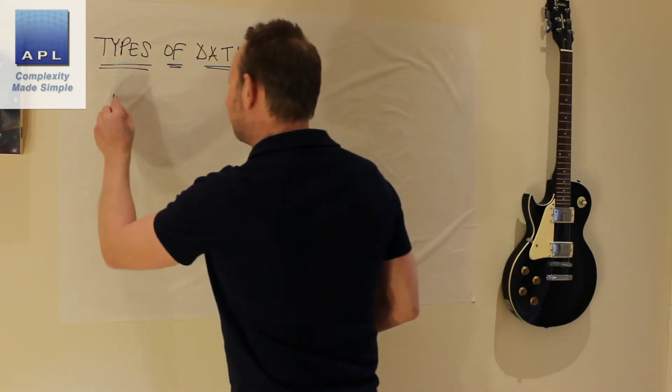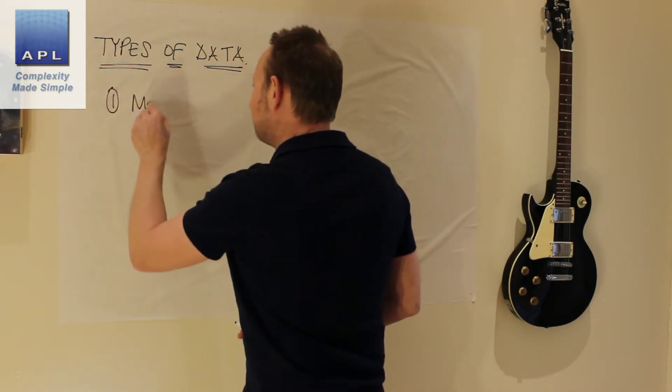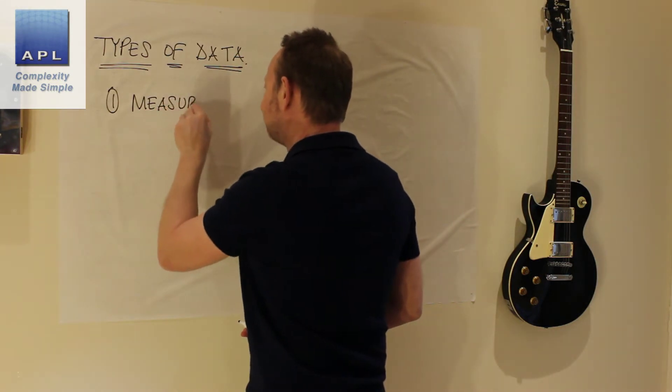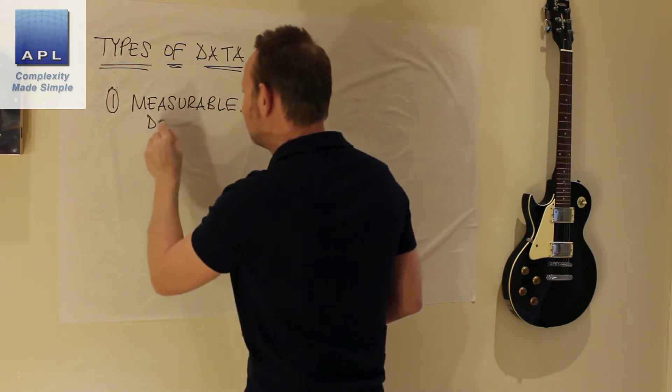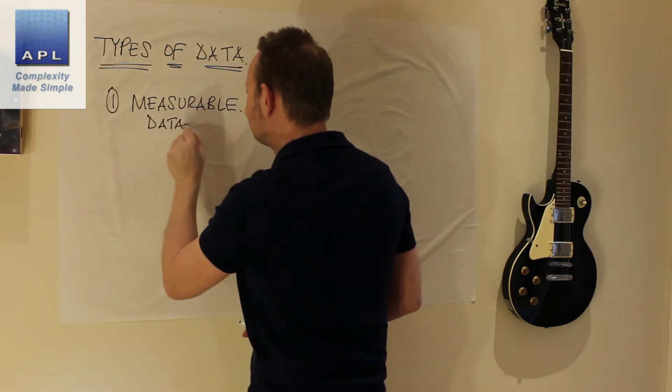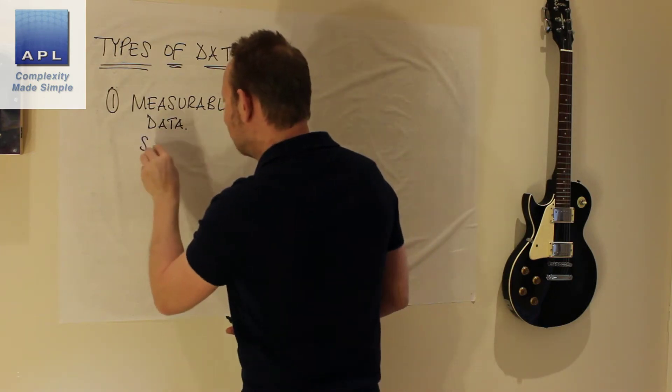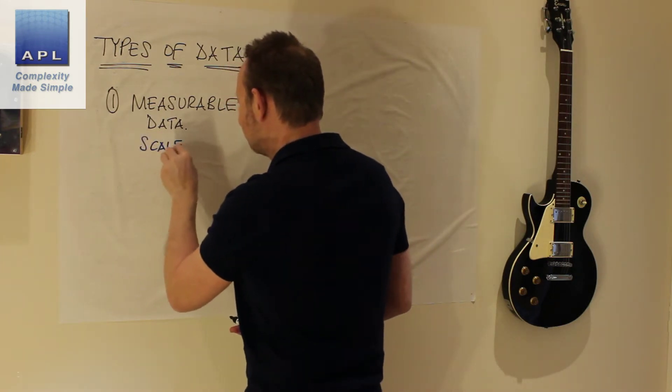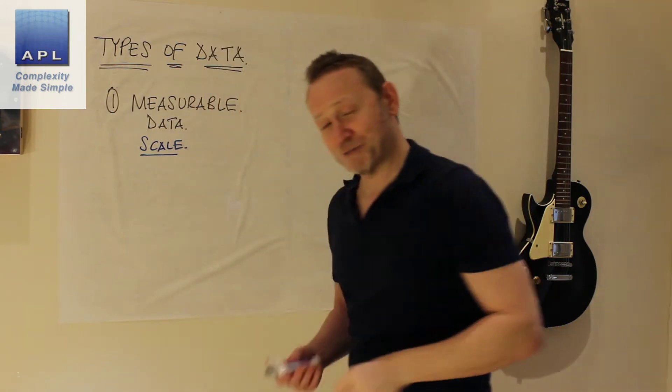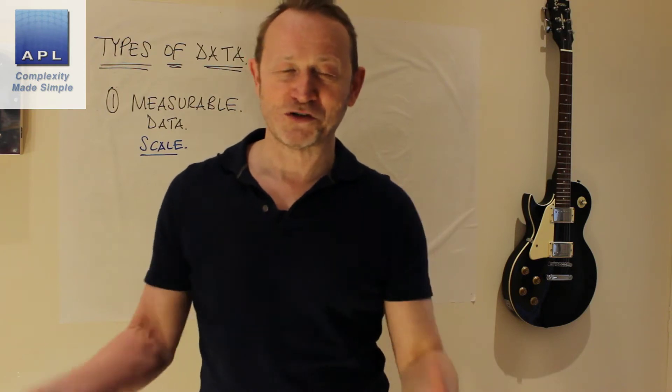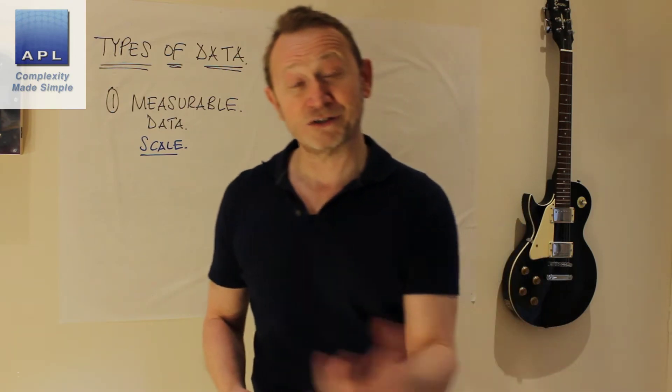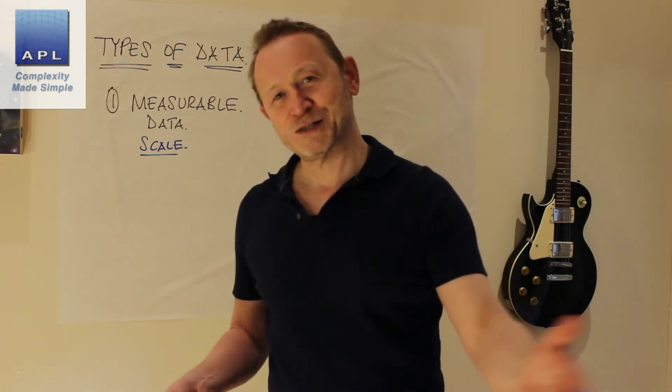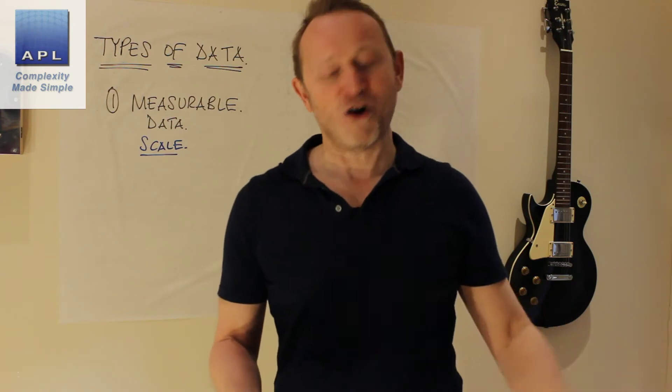So here's the two types of data. The first one is known as variable data. I prefer to call it measurable data. What does that look like? It's on a scale. Typically, you're going to measure millimeters, temperature, hardness, volts coming out of a circuit. Measurable data is typically on a scale. It's also known as continuous data because you can be anywhere on that scale.